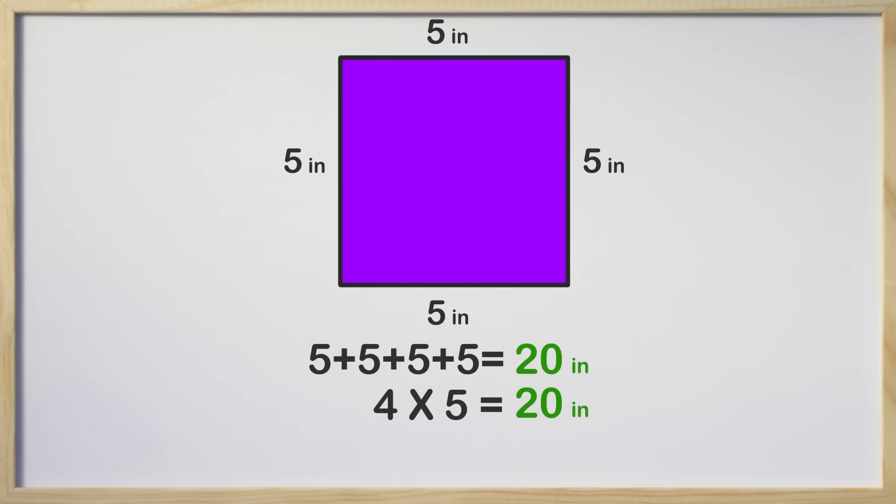Multiplication is repeated addition but when finding perimeter you can only use multiplication when the polygon sides are all the same length. So if all sides are the same length you can multiply that length by the number of sides to get your perimeter. This can be tricky to remember so if you have any doubt add up all the sides and you know you will get your perimeter.